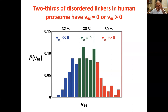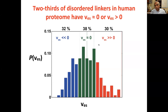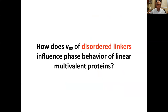About 68% of linkers have either close to zero or positive effective solvation volume. But there are a whole host of linkers that tend to be very sticky for one another. Interestingly, a lot of the linkers in the zero or positive effective solvation volume category are prevalent in polyvalent molecules, whereas the very sticky ones are in things like dimers or trimers — low valence molecules. What we decided to do was ask: what would titration of the effective solvation volume of linkers do? How does the effective solvation volume of disordered linkers influence the phase behavior of linear multivalent proteins?